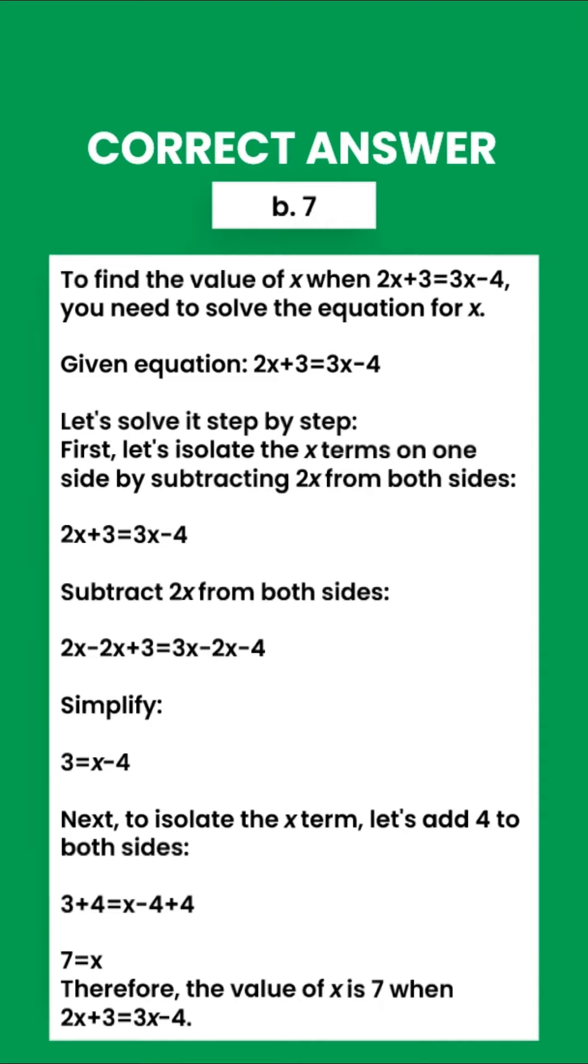2x minus 2x plus 3 equals 3x minus 2x minus 4. Simplify. 3 equals x minus 4.